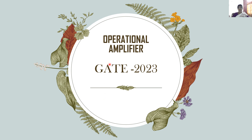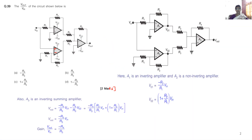A pleasant greetings to all. In this video, I am going to explain a problem in operation amplifier that is already asked in GATE 2023. This is the problem: find V_out by V_in of the circuit shown below.